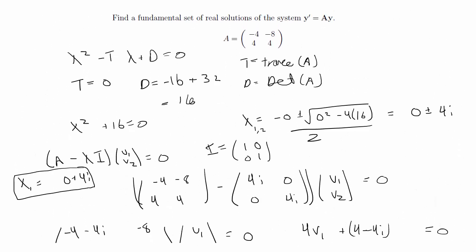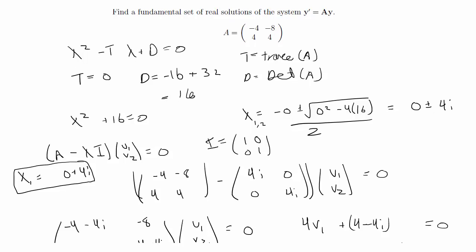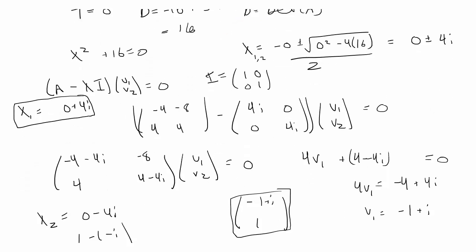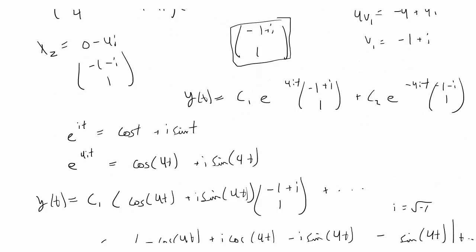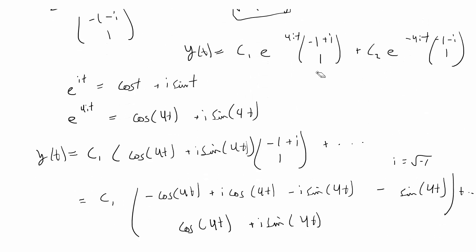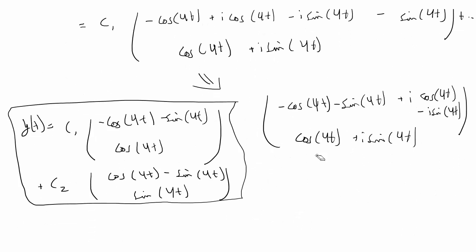This process is basically the same steps as for two real eigenvalues; however, there's the extra step of applying Euler's formula after finding the imaginary solution, and then simplifying by separating the real and imaginary parts to get the final real-valued solution.